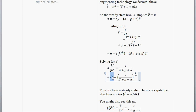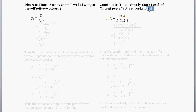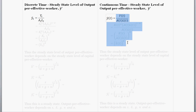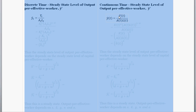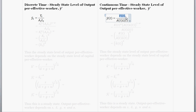Now let's go through and solve the rest of the model. Up next is output per effective worker, that's y-hat, and we want to find its steady state level, which we denote with a little star. I'm following the convention where the left column is discrete time with subscripts like k sub t, and the right column is continuous time where output is written as a function of time.